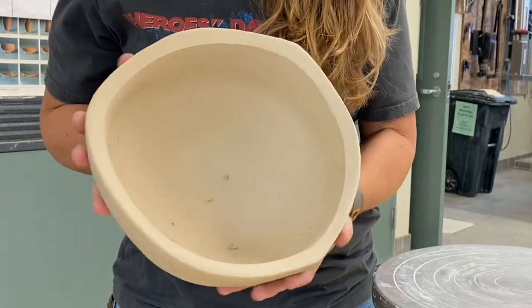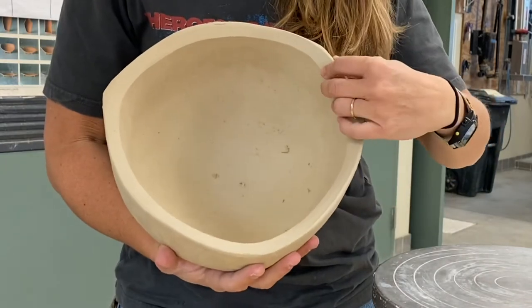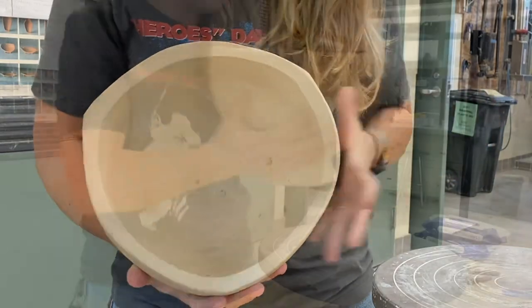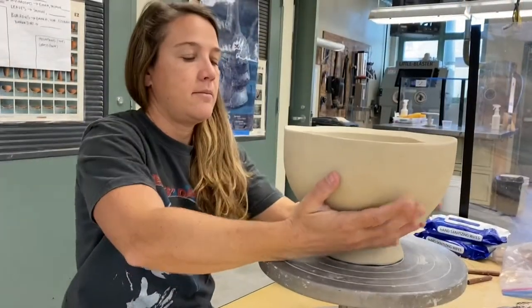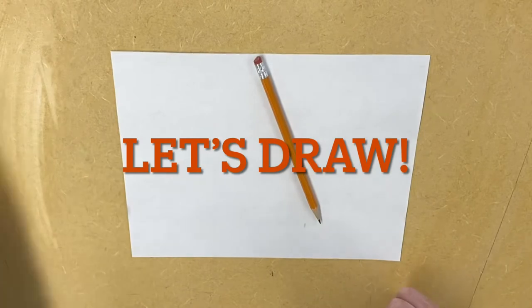Is it round? Does it have a thick rim? A thin rim? We're going to take a minute to look. What you're going to need is a piece of paper, a pencil, and a sharpie.